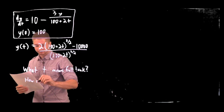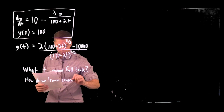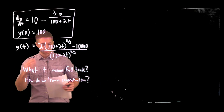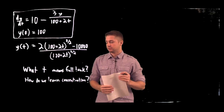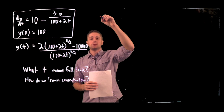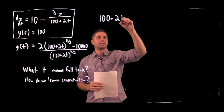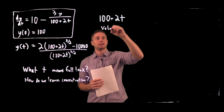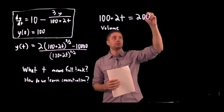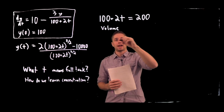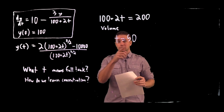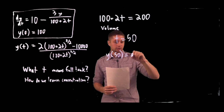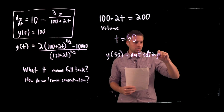We established that the volume of water in the tank is 100 + 2t gallons. Setting this equal to 200, we find t = 50. So the tank is full at t = 50 minutes. At that point, y(50) gives us the amount of salt in grams when the tank is full.